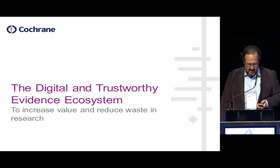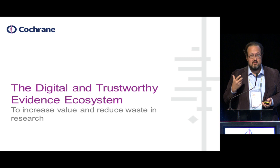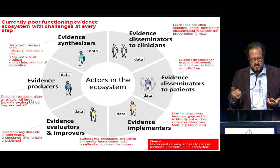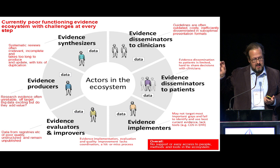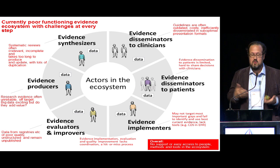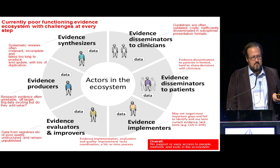The digital and trustworthy evidence ecosystem aims to increase value and reduce waste in research. Currently the ecosystem is poorly functioning with challenges at every step. Starting with evidence producers: research evidence is often unreliable and off-target, big data sources are exciting but methods to incorporate them are lacking. Evidence synthesizers face the problem that systematic reviews are often irrelevant, incomplete, and take too long to produce and update, with lots of duplication of effort.